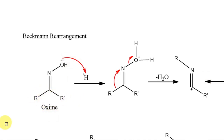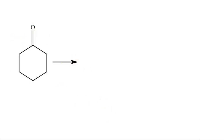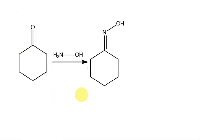This is a ketoxime. Aldoximes do not give a high yield for this reaction — aldoxime means one of R or R' is H. The most important example is the preparation of caprolactam, which is a precursor for nylon-6. Hydroxylamine reacts with a ketone to form a ketoxime, which is then the precursor for Beckman rearrangement.